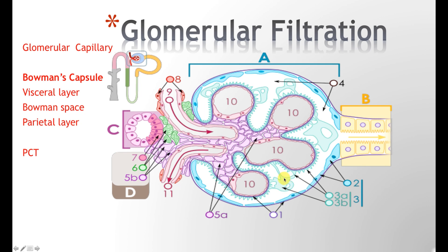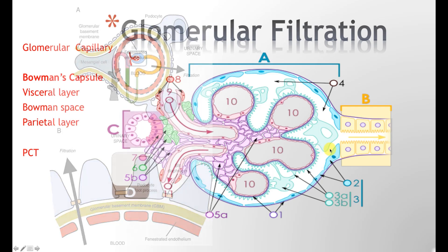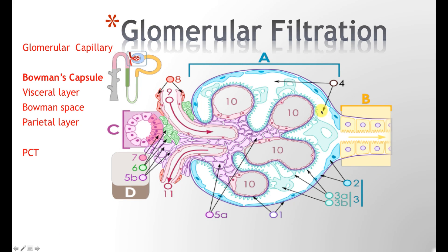The next structure is your podocyte, which makes up the visceral layer. This is your podocyte, and this extension is known as the pedicle — these are the foot processes. In between these foot processes you have filtration slits where the filtrate moves across. The white space here is your capsular space or Bowman's space. The light purple-pink cells are your intra-mesangial cells, and the extra-mesangial cells are located outside. Together with the juxtaglomerular cells and macula densa cells, they form the juxtaglomerular apparatus.